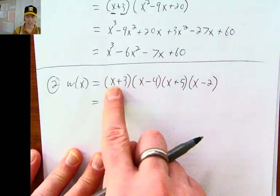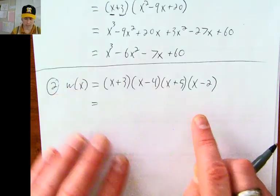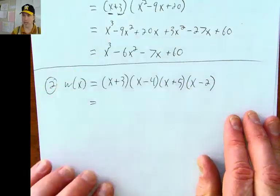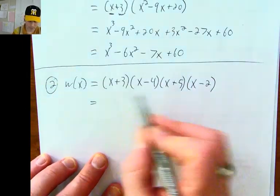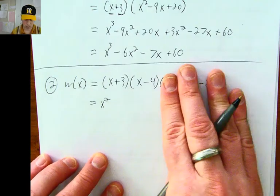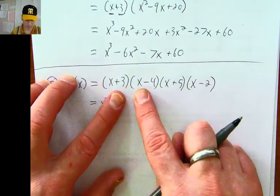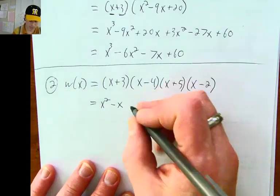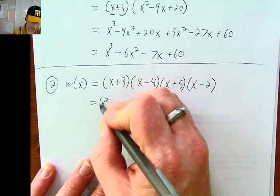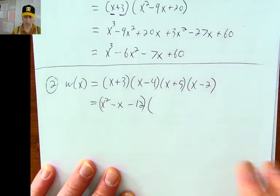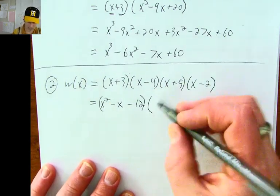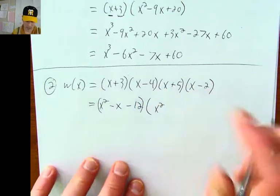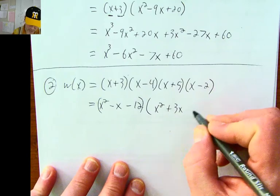Since there are four terms, I would first multiply the first two together and multiply the last two together. Multiplying the first two: x squared, negative four x plus three x is negative x, and three times negative four is negative twelve. Multiplying the last two: x times x is x squared, negative two x plus five x is plus three x, and then minus ten.